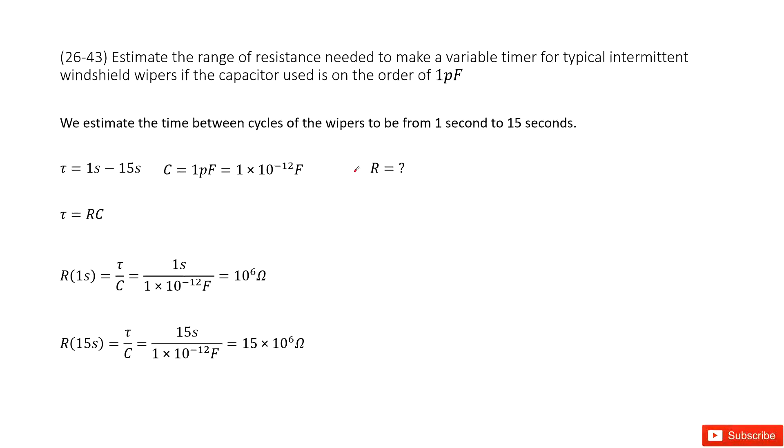We need to find the range of resistance needed to make a variable timer for a typical DC circuit. If the capacitor used is on the order of 1 picofarad, we can estimate the time between cycles of the wiper from 1 second to 15 seconds.